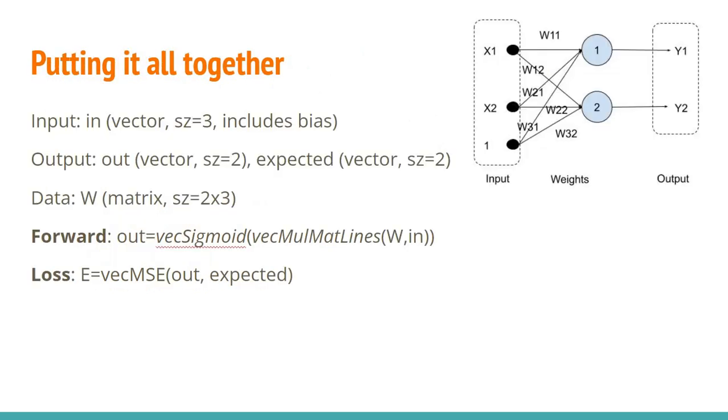So putting it all together, considering a very simple neural network which has, for example, two neurons, only two neurons here. So this would be only the output layer without any hidden layer.